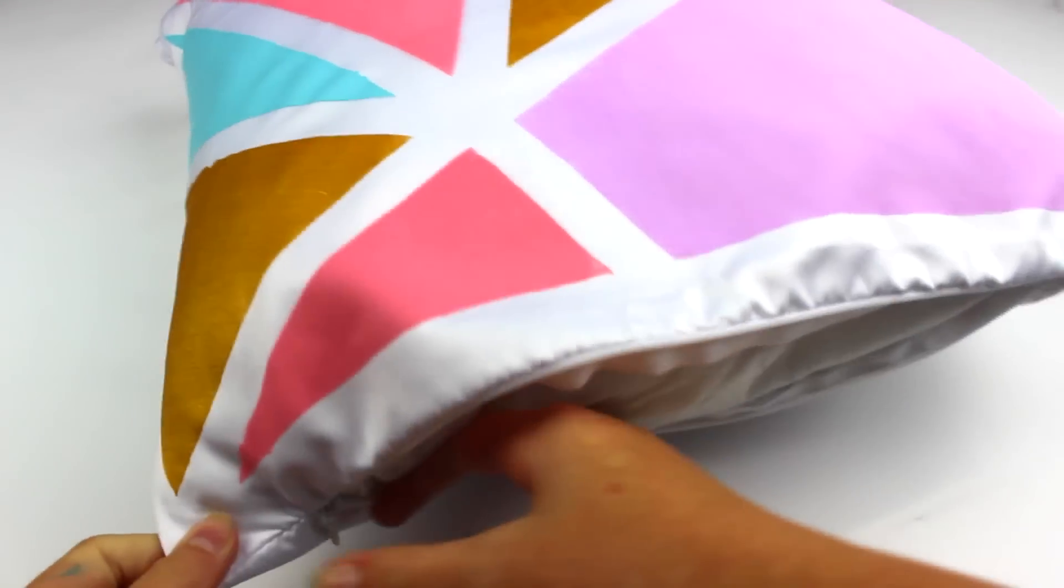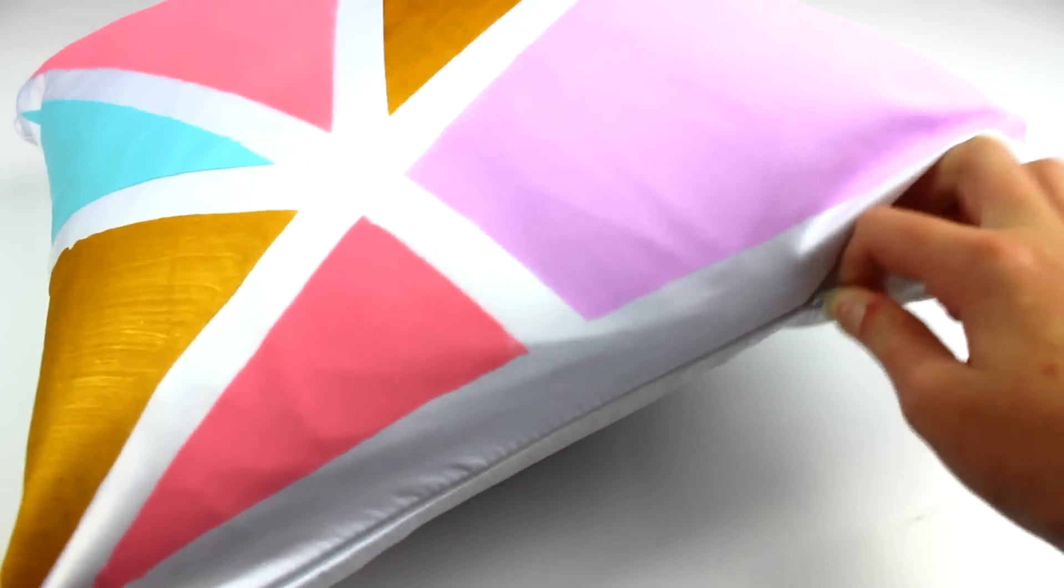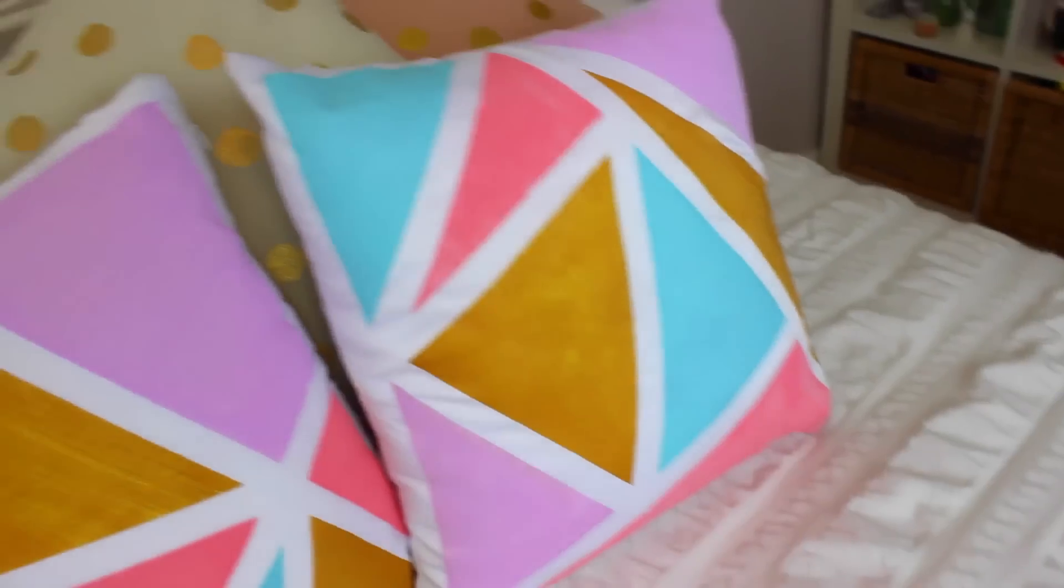And then put in your pillow and then you are done. This DIY cost me under $10. The pillow insert was $4 and so was the cover. And then I had the paint and the tape and it was so easy and I absolutely love the way it turned out. It brightens up my bed so much. And I think this would make a great addition and brighten up anybody's bed.